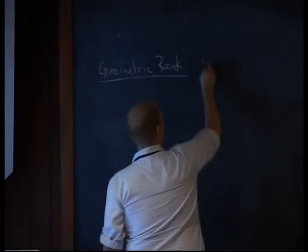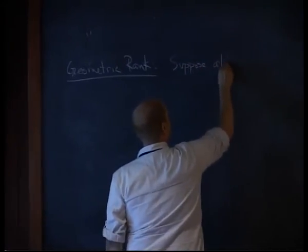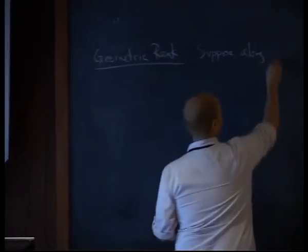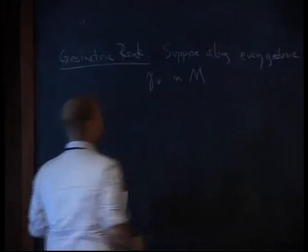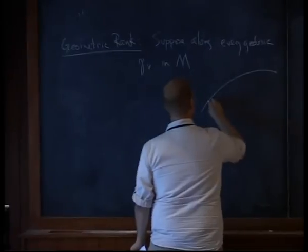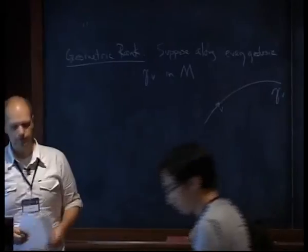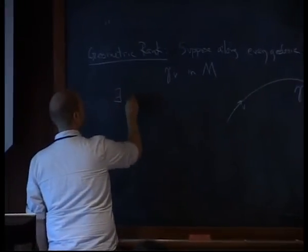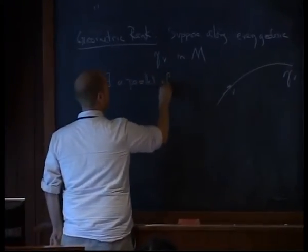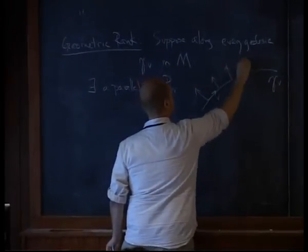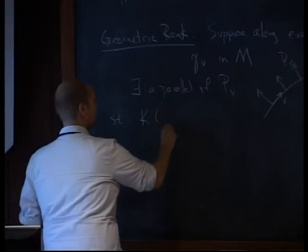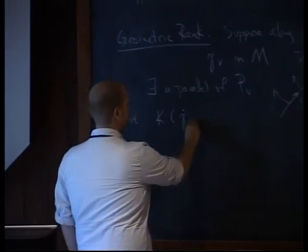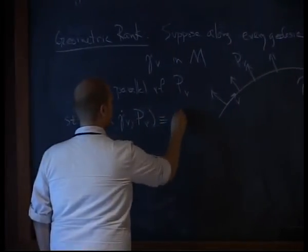The setup is the following. Suppose that along every geodesic gamma_v in a manifold — we're looking at a geodesic with initial direction v — suppose that there exists a parallel vector field p_v such that the sectional curvature between the geodesic direction and this vector field is a constant c, and this will be the same constant for all geodesics in your manifold.